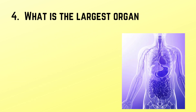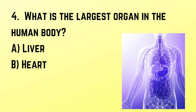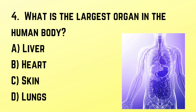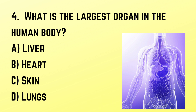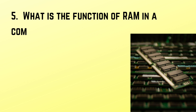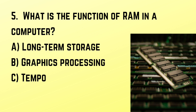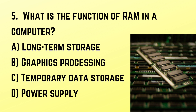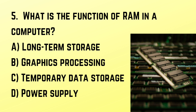Question number 4: What is the largest organ in the human body? Correct answer: C. Skin. Question number 5: What is the function of RAM in a computer? Correct answer: C. Temporary data storage.